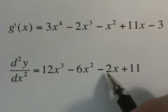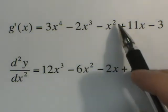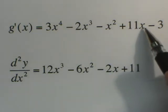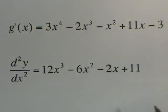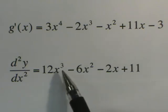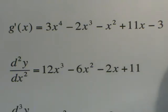2 times negative 1 is negative 2x to the 1st power. 11x becomes, as we take a derivative, just 11, and the constant drops out. So our second derivative would be 12x cubed minus 6x squared minus 2x plus 11.